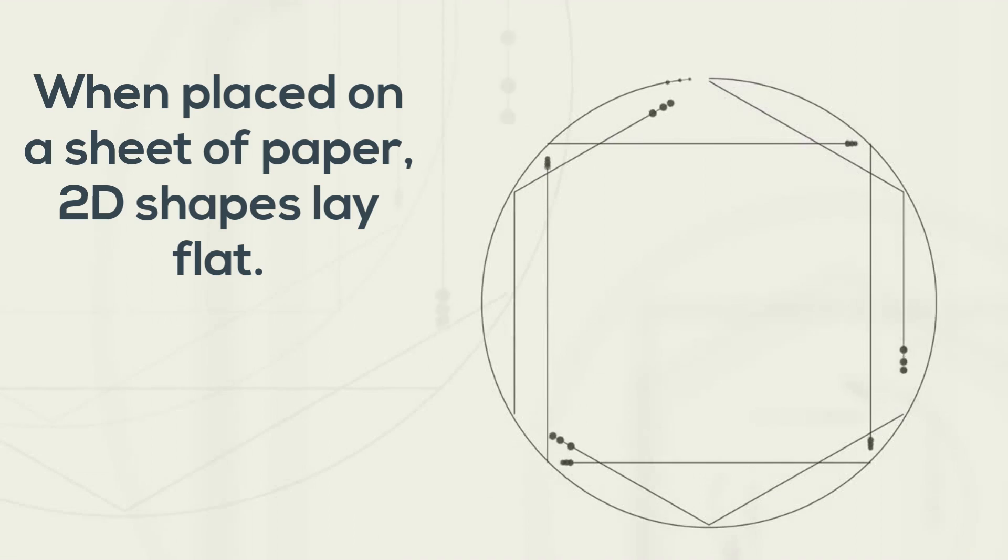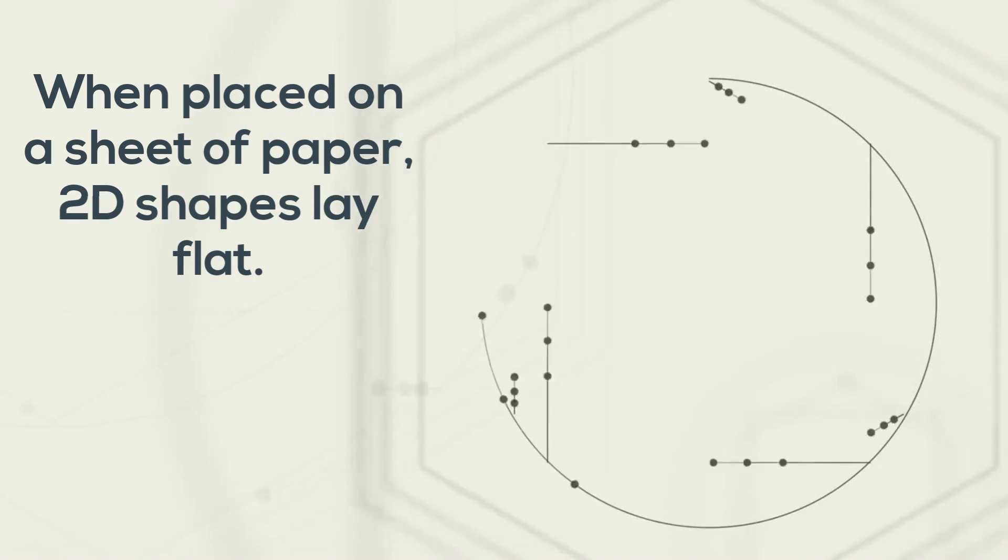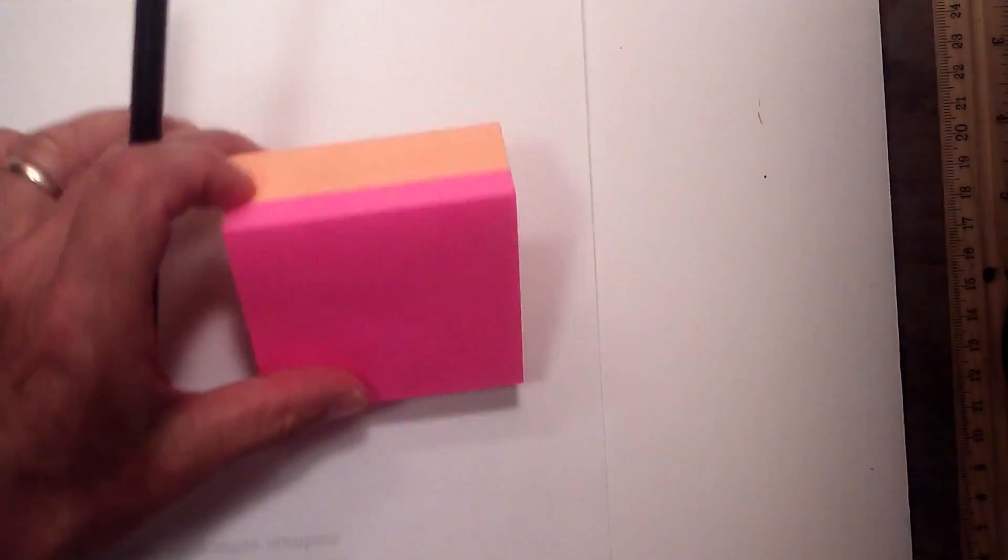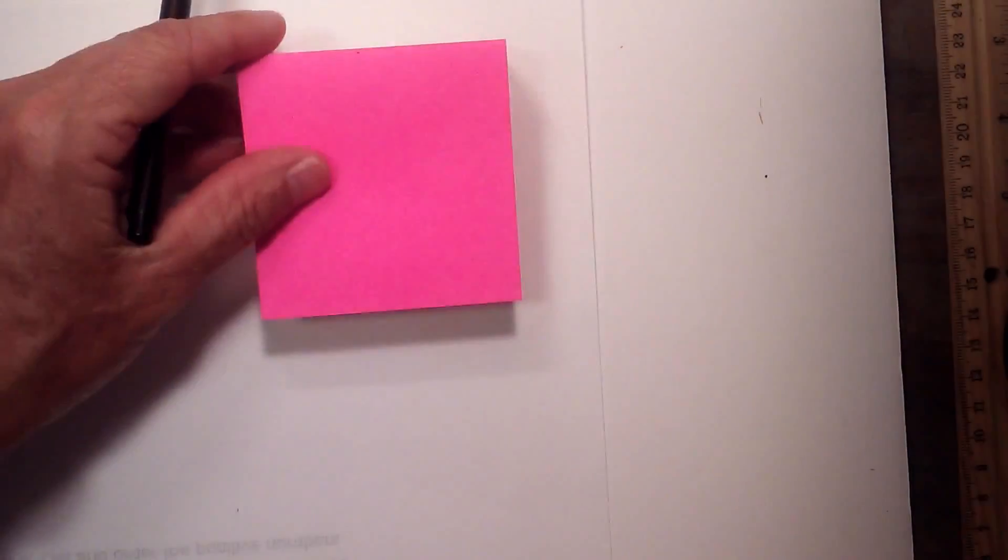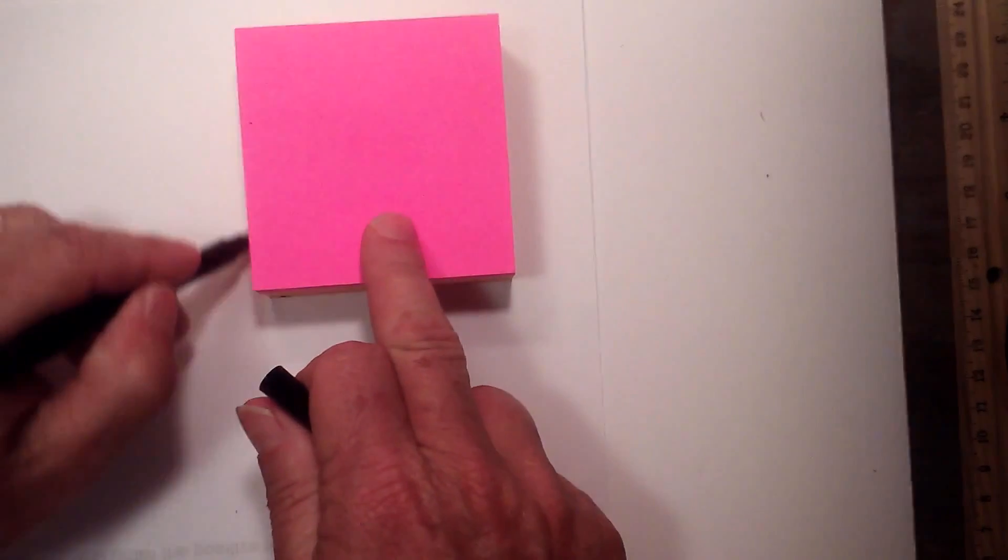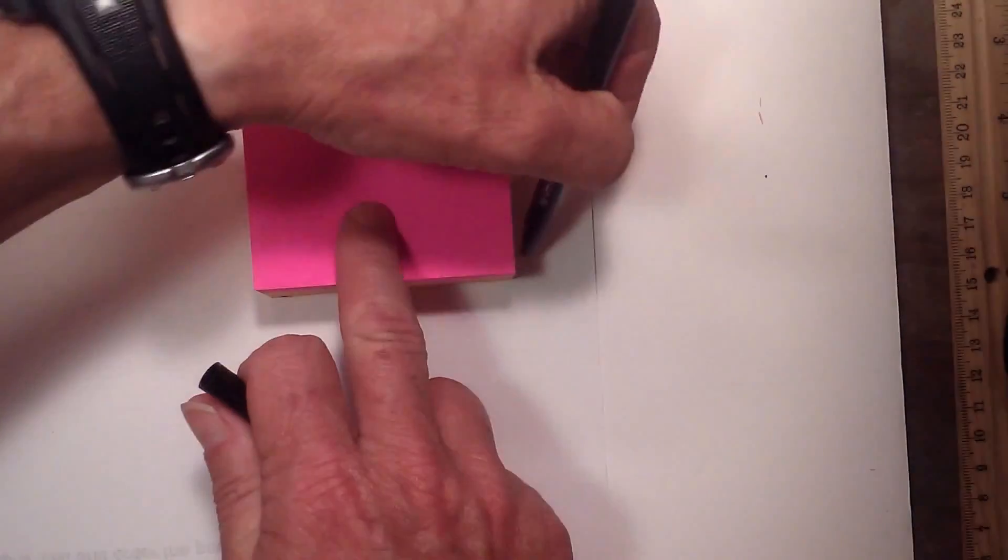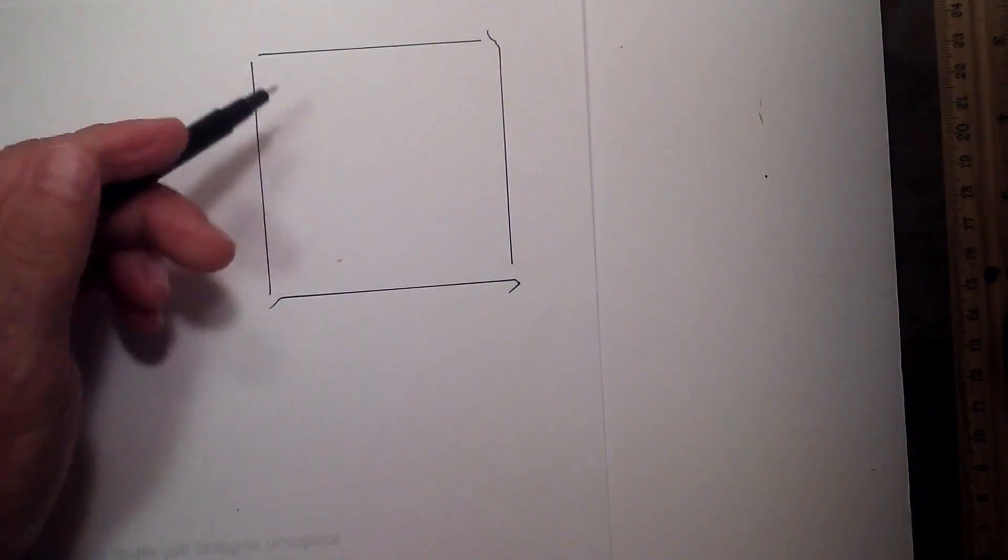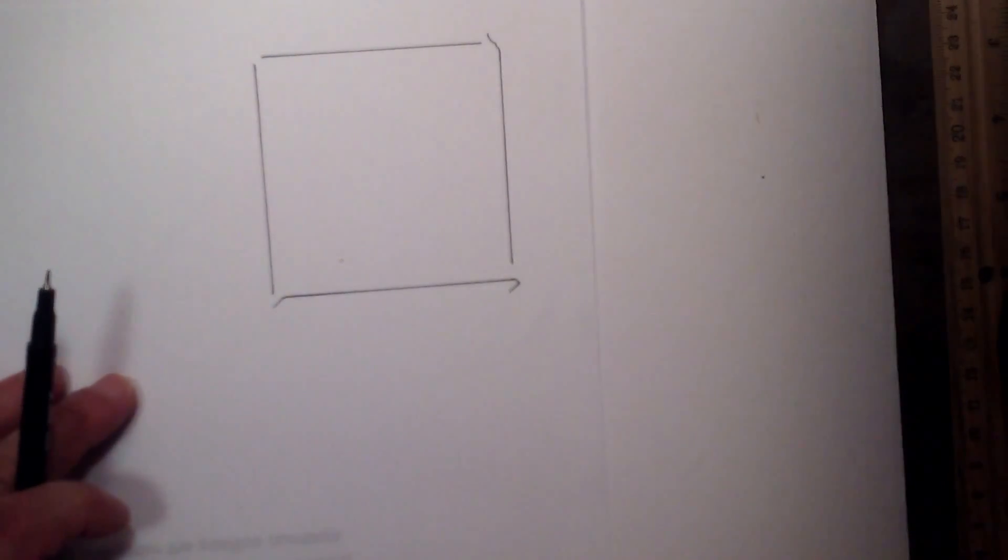When placed on a sheet of paper, 2D shapes lay flat. The 3D object has length, width, and height. Then I'll trace around this. And here is your 2D object that only has length and width.